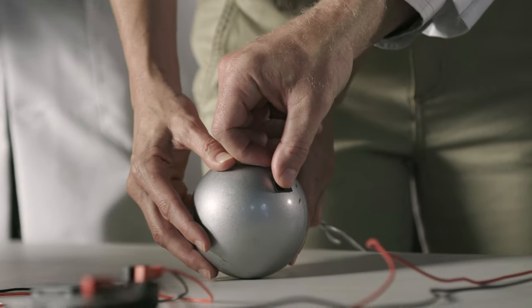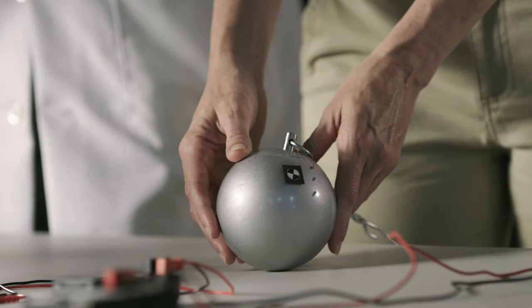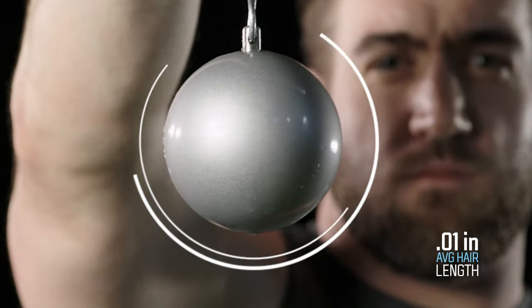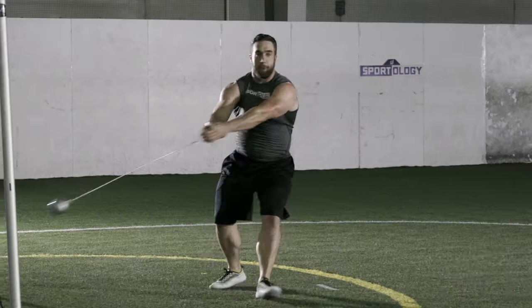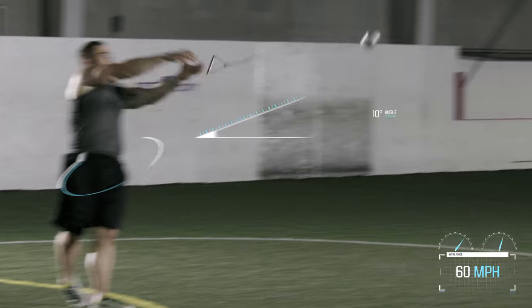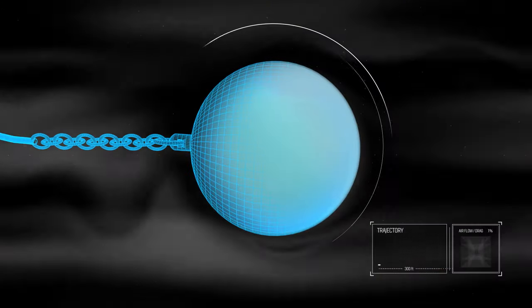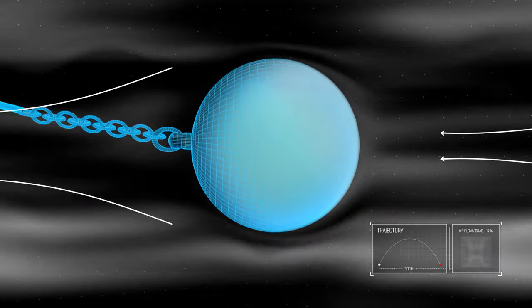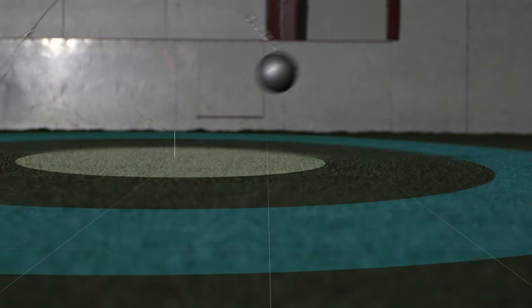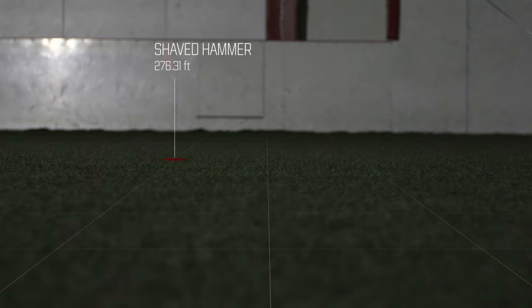We're having Lucas throw hammers with varying lengths of hair, each outfitted with custom accelerometers. First up, a freshly shaved hammer. Because the hammer is completely bald, air is allowed to flow tightly over its surface with very little resistance. Lucas' first throw reaches a distance of over 276 feet.